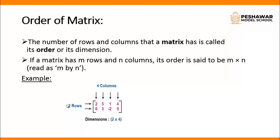The order of a matrix is the number of rows and columns. In the given example, we can easily understand the order of a matrix. In the given matrix, we have two rows and four columns. So the order is two by four, or two cross four. We always write the number of rows first, then the number of columns.